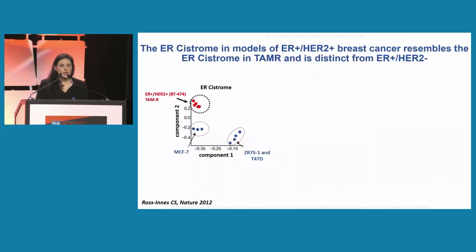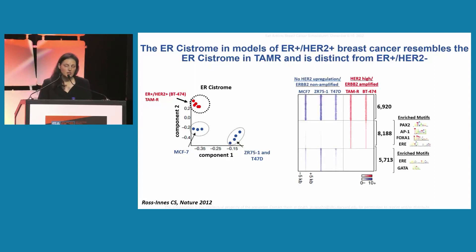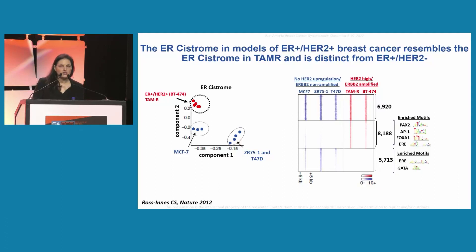In cell lines, the ER cistrome in ER-positive HER2-positive cells is very different from the ER cistrome in ER-positive HER2-negative cells. In addition, the ER-positive HER2-positive cistrome resembles the cistrome in cells that acquire tamoxifen resistance. This is due to more than 8,000 ER binding sites that are gained in both the ER-positive HER2-positive cells and the tamoxifen-resistant cells, and these binding sites are enriched in PAX2, AP1, and FOXA1 motifs.